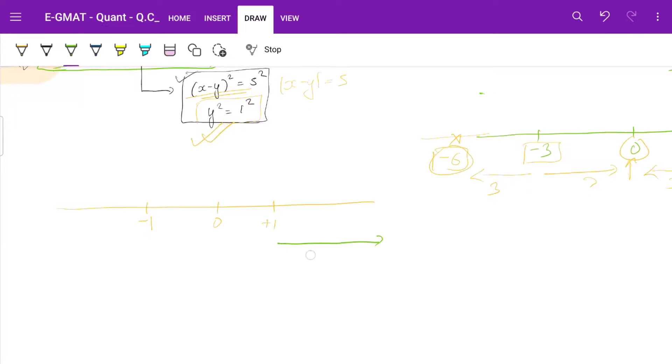So plus 1 if we go plus 5 units this side, we reach 6. If we go 5 units this side, we will reach minus 4. Now from minus 1, if from this point we go 5 units this side, we will reach at plus 4 and if we go from here 5 units this side, we will reach minus 6. So possible values are minus 6, minus 4, plus 4 and 6.